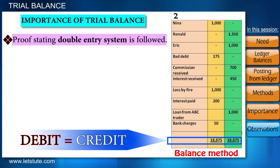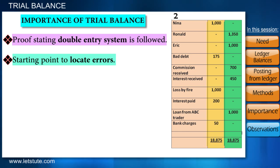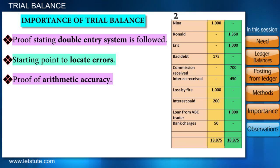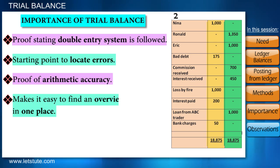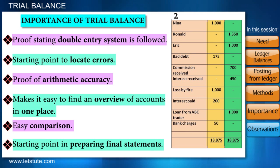We use this trial balance as a checking point. If the totals are not equal, we would know that somewhere we may not have given the correct two equal effects in our records. The trial balance proves the arithmetic accuracy of the ledger entries prior to preparing the final statements. It also brings all ledger balances into one place, making it easier for a businessman to review all his accounts at a glance. Comparing it to another month or year's trial balance allows him to see if balances in a particular account have increased or decreased. This trial balance is also the starting point in preparing final statements.